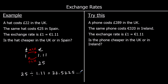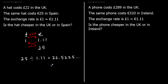This is money, so we want to write this to two decimal places. We look at the next one — if it's 5 or above, round up; if it isn't, leave it as it is. So we're going to leave it as it is: 22 pounds and 52 pence. That's the price of the hat in Spain. In the UK it's 22 pounds, so it's cheaper in the UK.